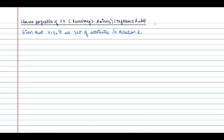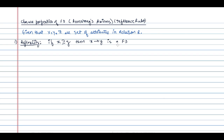The first closure property is called reflexivity. If X is a superset of Y, or Y is a subset of X, then X determines Y is a functional dependency. For example, AB determines A is a trivial functional dependency — Y is a subset of X, which is why this functional dependency always holds.